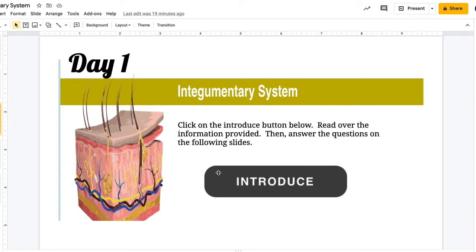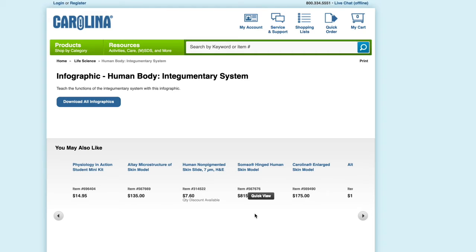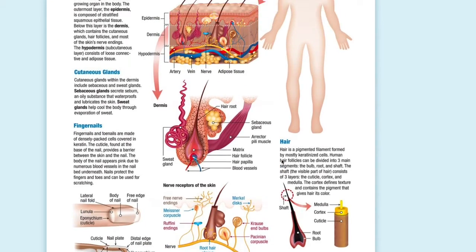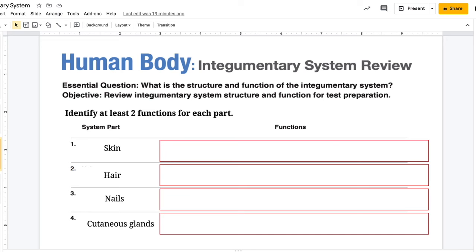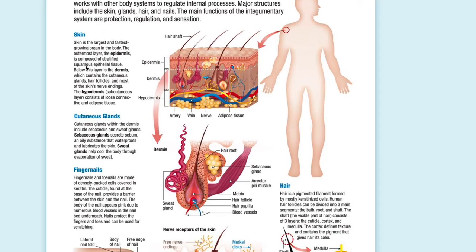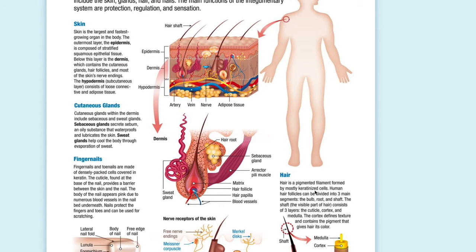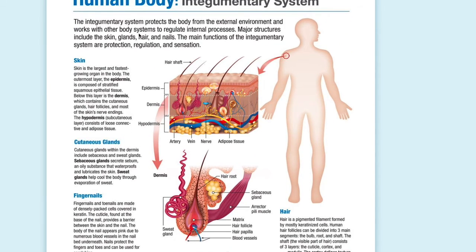There's a linked button here that says 'Introduce.' You're going to click this and go to that website — it's going to help you get information for the first part of the assignment. You'll use it to complete a chart where you need to give two functions for the skin, two functions for hair, two for your fingernails, and two for the cutaneous glands. The linked document covers the functions of the integumentary system as well as your skin, fingernails, hair, and cutaneous glands, so everything you need is right there.